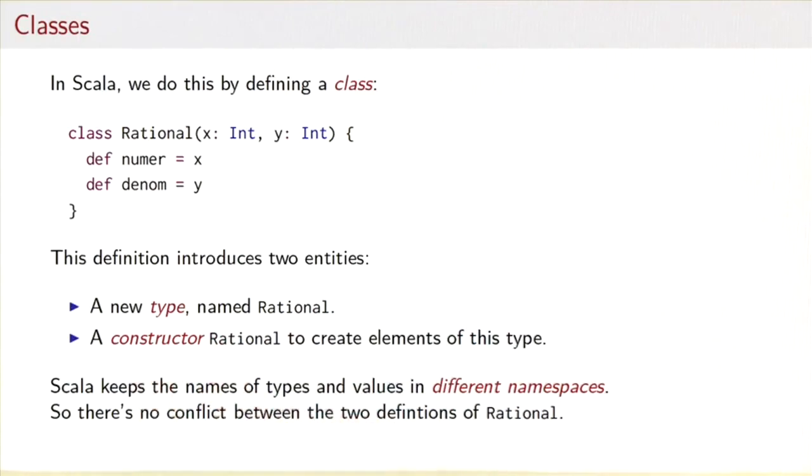Scala keeps the names of types and values in two different namespaces. It always knows from the context whether you mean a type or a value. So there's no conflict between the two definitions, the constructor and the type of a rational.